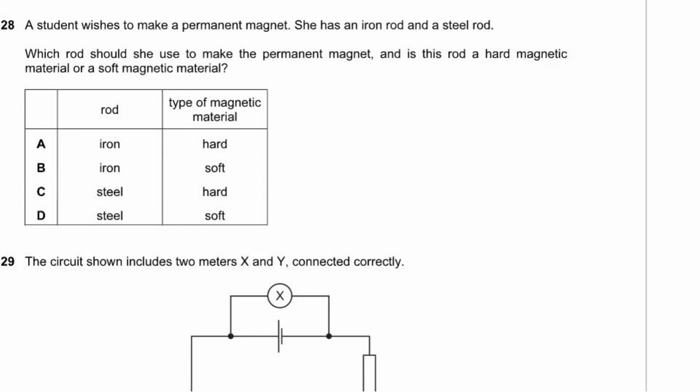Question 28. To make a permanent magnet, you need a hard magnetic material. Iron is magnetically soft — it loses its magnetism quickly. Steel is a hard magnetic material and maintains its magnetism. So she should use the steel rod. The answer is C.